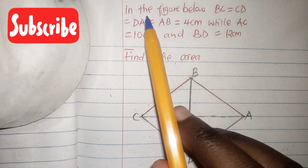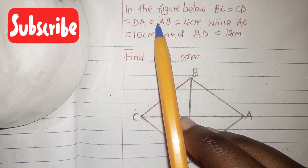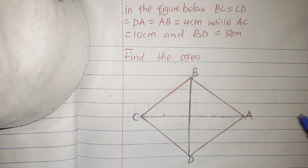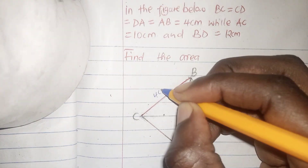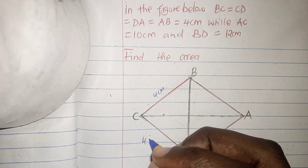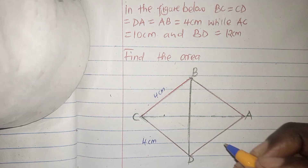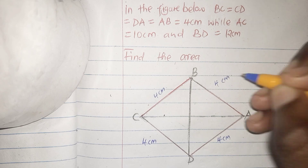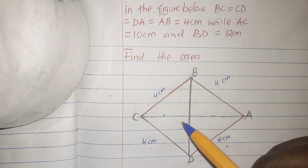In the figure, BC = CD = DA = AB = 4 cm. So BC is 4 cm, CD is 4 cm, DA is 4 cm, and AB is 4 cm — all sides are equal.